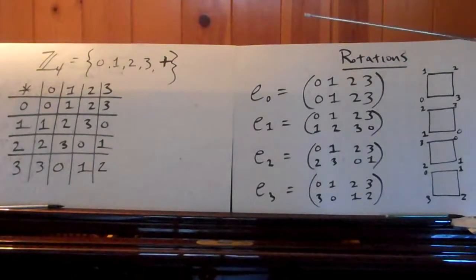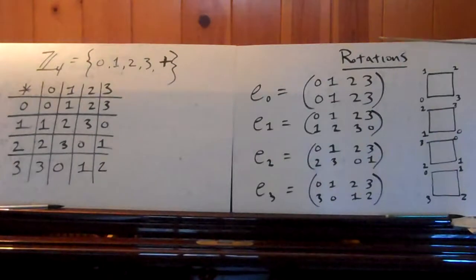And over here we can see the rotation operations, each corresponding to a row in the Cayley table: 0, 1, 2, 3, then 1, 2, 3, 0, and so on.